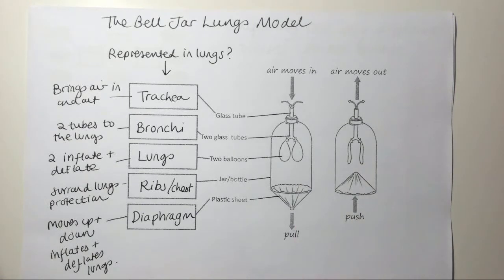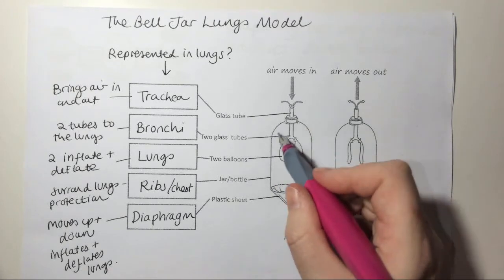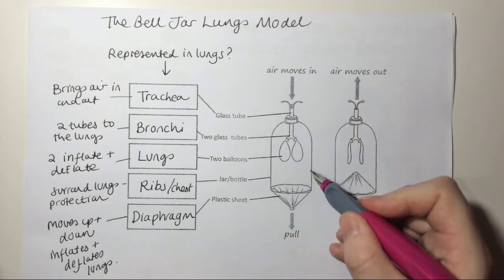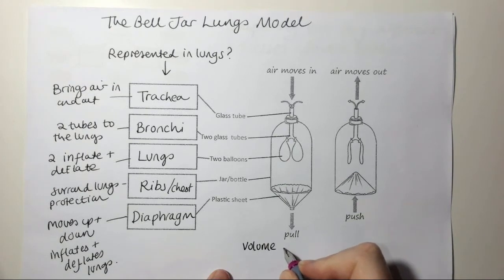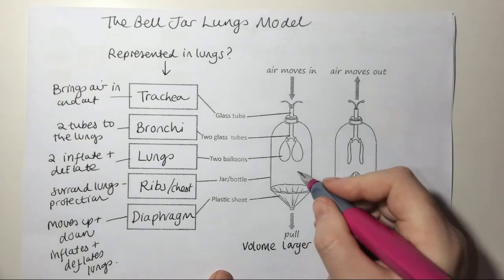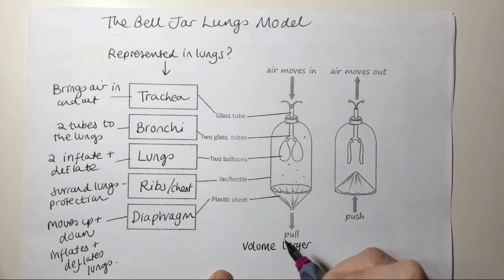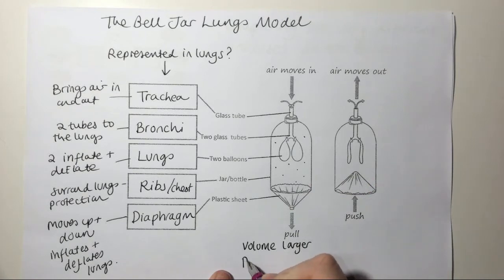The next thing that this bell jar lungs model enables us to do is work out why the lungs inflate and deflate, and this is a little bit harder. We have to think about the volume — the space available inside this jar, which represents the chest cavity. If you pull it, the space here is bigger, so when we pull it the volume inside is larger. This means that the air particles have more space, and when the same amount of air particles have more space to move around, the pressure is lower.